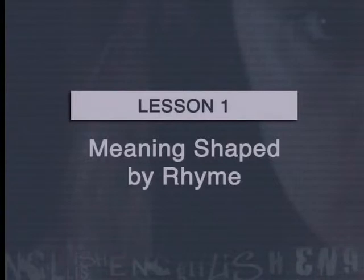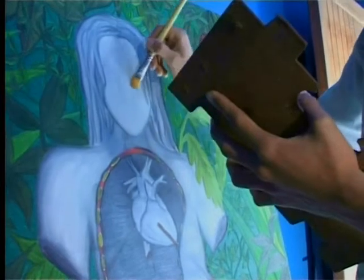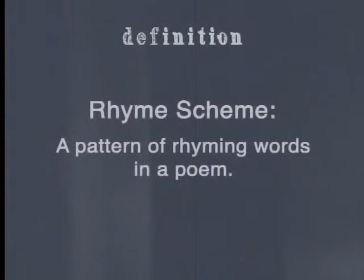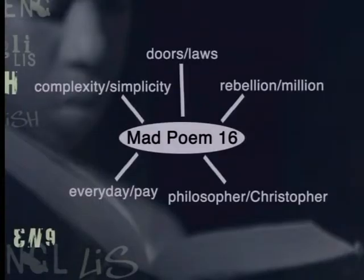Now let's have a more detailed look at the lessons in the series and how you can use them in your classroom. The first lesson explores how meaning is shaped by rhyme, and we also interview a poet. Prior to showing this lesson, you may want to ask your learners what kind of person comes to mind when they visualize a poet — jot down their suggestions on the blackboard. After watching the lesson, ask them how their stereotypes of a poet differed from the poet who was interviewed. This lesson teaches the basic concepts of rhyme, rhyme scheme, and syllables, and discusses a poem called Mad Poem 16 by Mbongeni Kumalo. Afterwards, you may want to find another similar poem with a distinctive rhyme scheme for learners to identify and comment on.